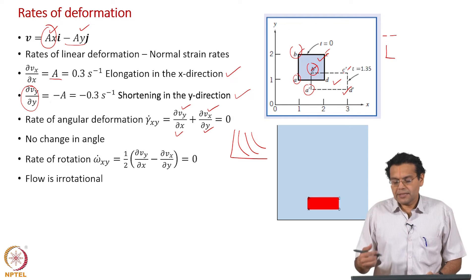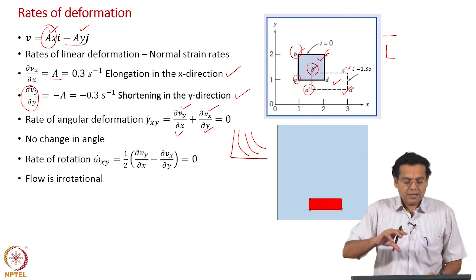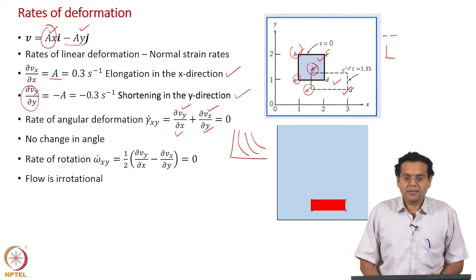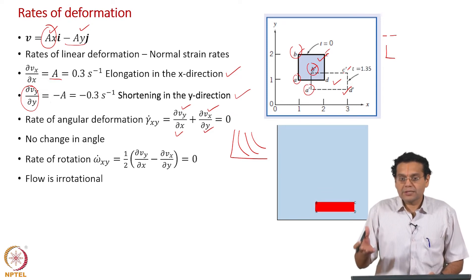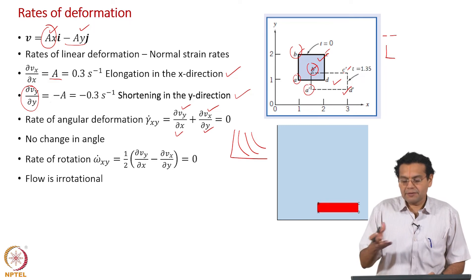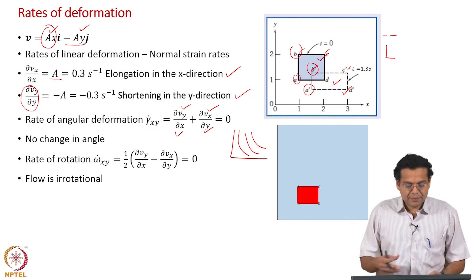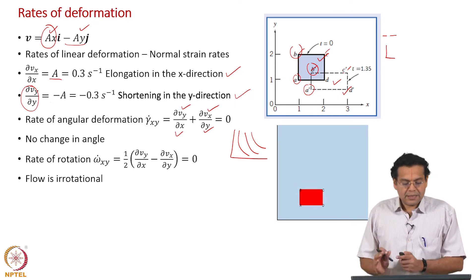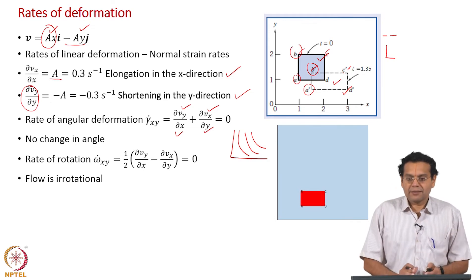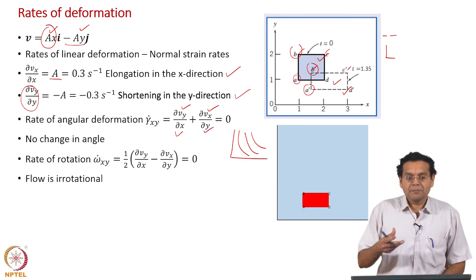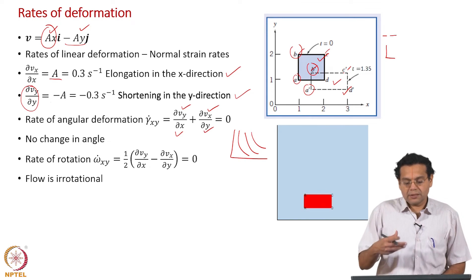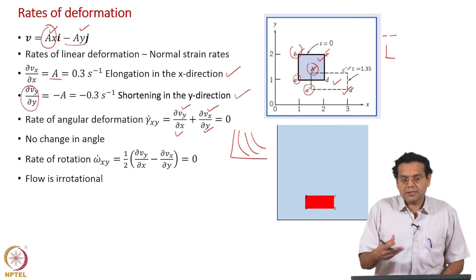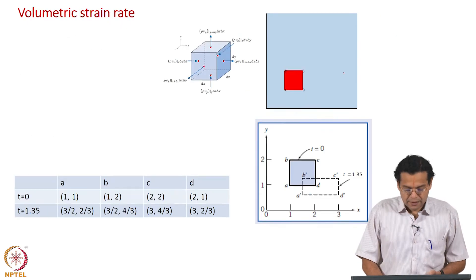This is a relatively simpler case compared to the earlier one. When angular deformation and rotation are present it becomes harder to connect what you see to the analysis. Here, because there is no angular deformation and rotation, whatever you see directly represents the normal strain rates we calculated. Earlier, the visible motion represented a combined effect of both deformation and rotation.